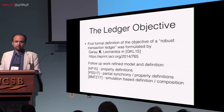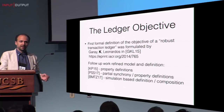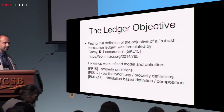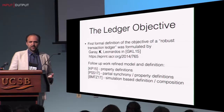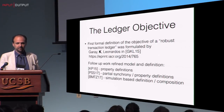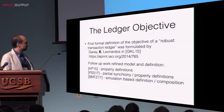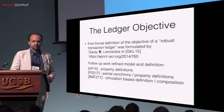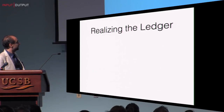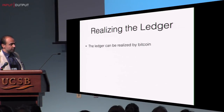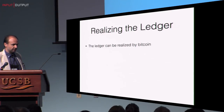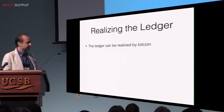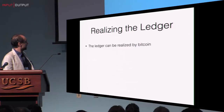Once you have an objective which is cleanly defined as such, you can ask: do we know the best way to realize it? Trying to answer that question is the topic of this final talk. We know that the ledger can be realized by Bitcoin, based on all these wonderful previous works.